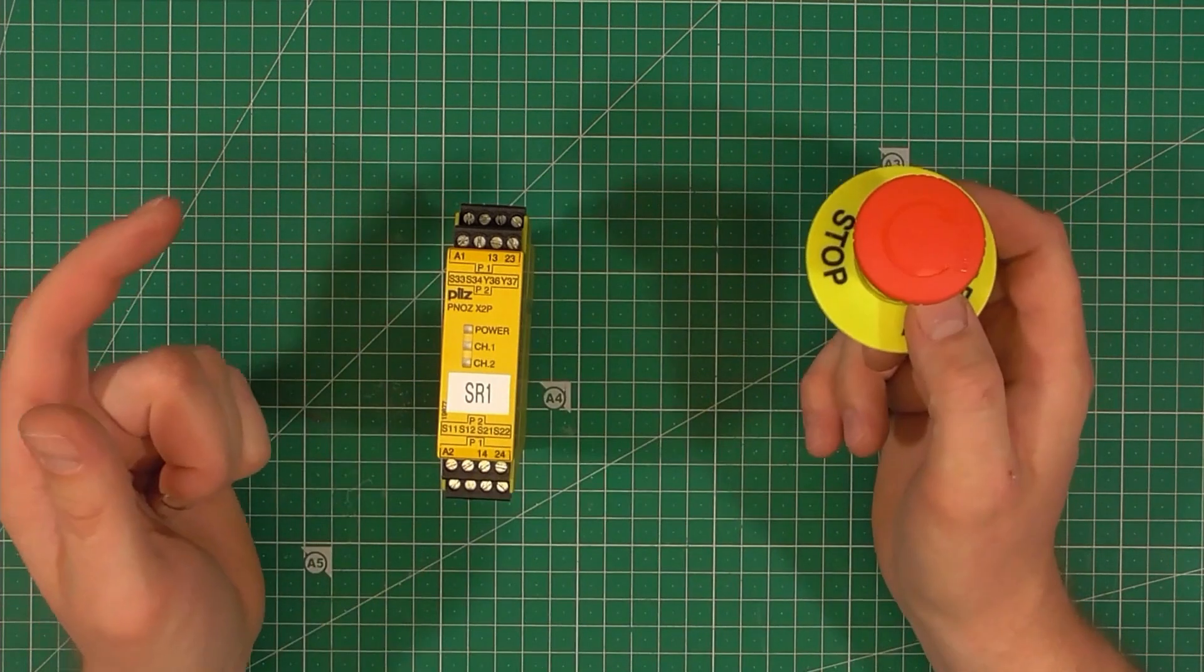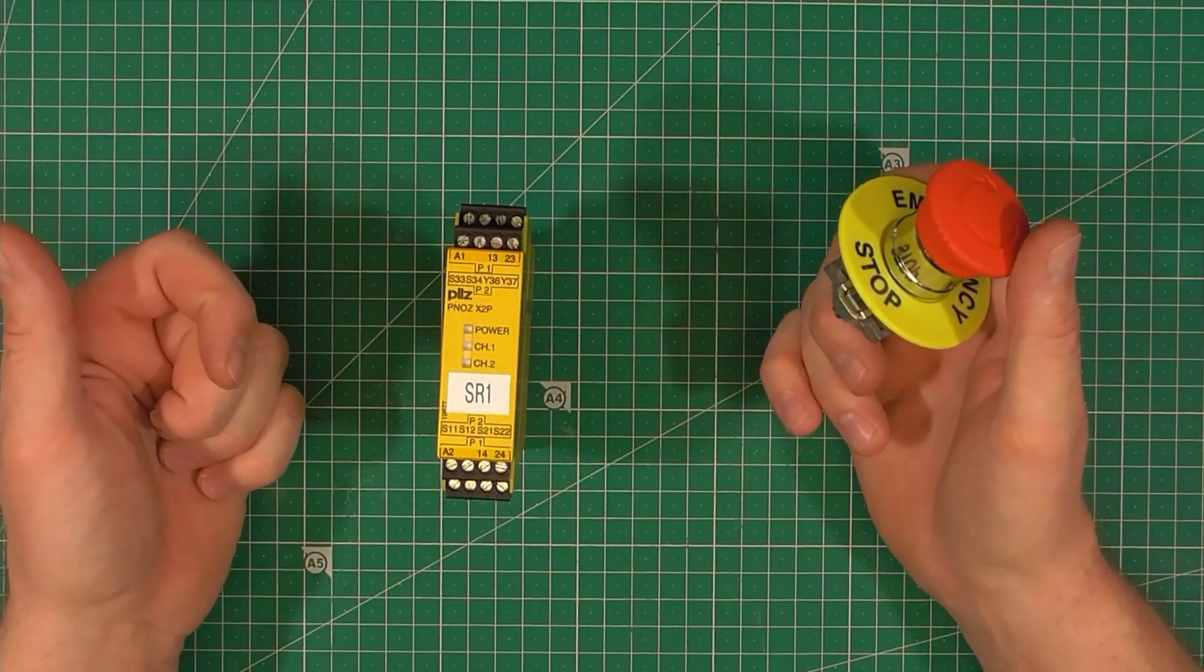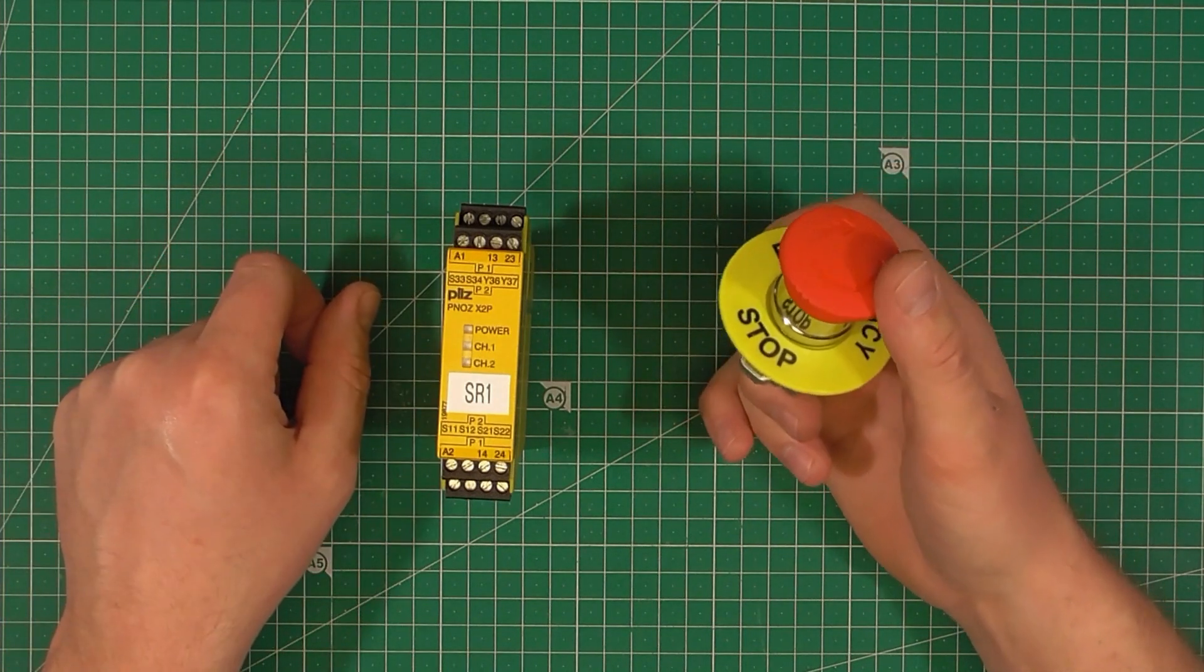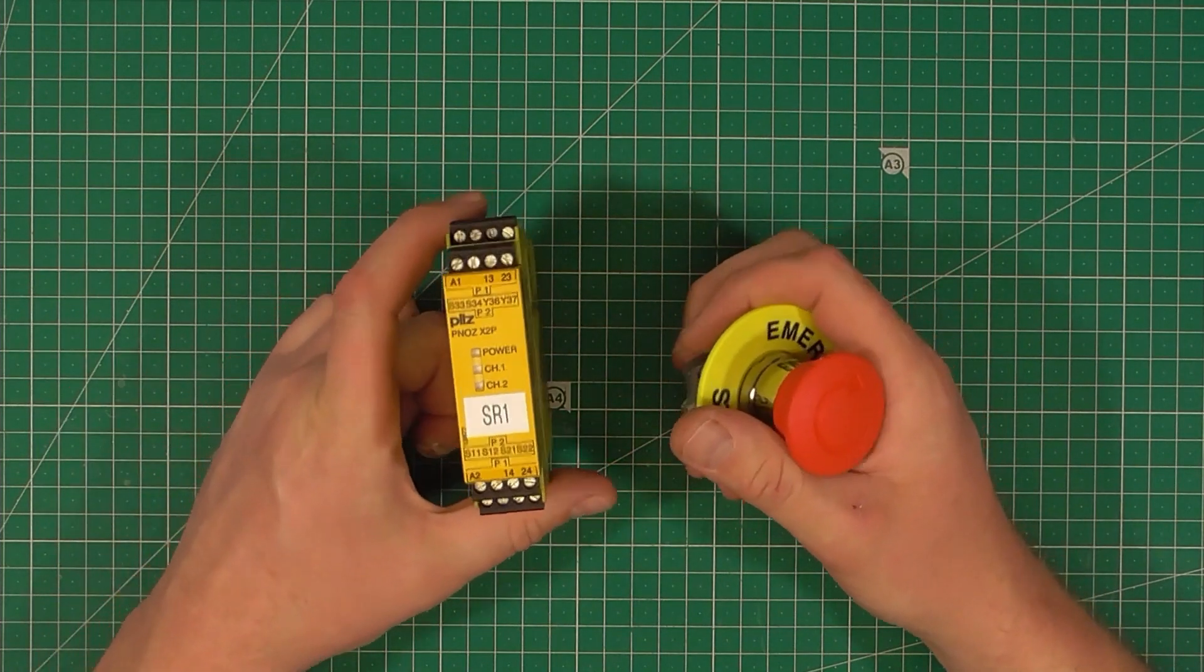The safety circuits are helping us to stop the machine safely and then are checking if it's safe to restart the machine after emergency stop.